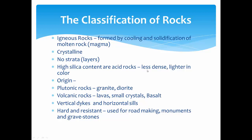Some igneous rocks are acidic rocks, which are less dense and lighter in color. Based on their origin, they are classified as plutonic rocks — like granite and diorite — and volcanic rocks, formed by lava, with small crystals. Plutonic rocks solidify inside the Earth's crust and have larger crystals. Volcanic rocks are formed on the surface and have smaller crystals. Plutonic rocks include granite; volcanic rocks include basalt, like our Deccan Traps.